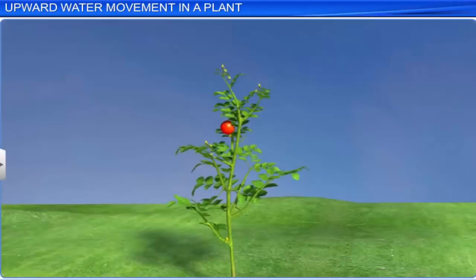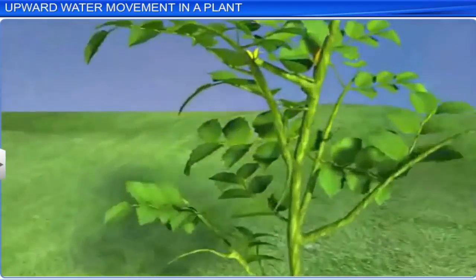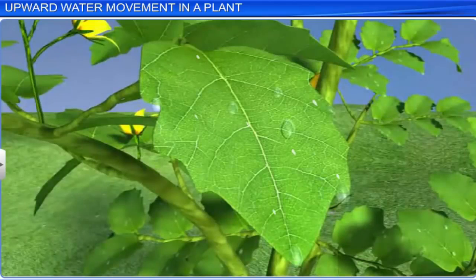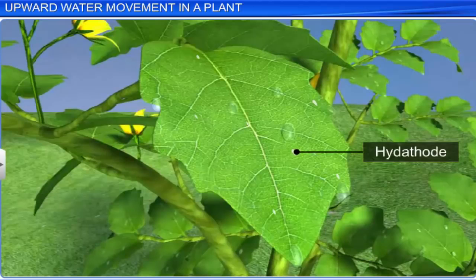At this time, the excess water collects as droplets around the special openings of veins called hydathodes, near the tip of grass blades. This water loss in its liquid form is called guttation.